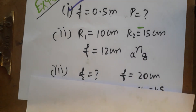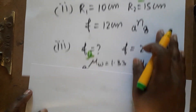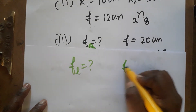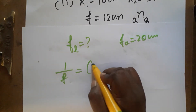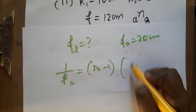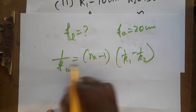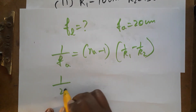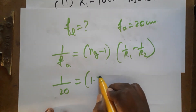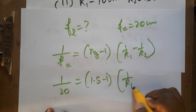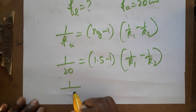For the third question, we need to find the focal length of the lens when placed in water. The focal length in air is given as 20 centimeters. We write the lensmaker's equation for the lens in air: 1 over f_air = (n_glass over n_air minus 1) times (1/R1 minus 1/R2). We know f_air is 20 centimeters and n_glass is 1.5, so (1.5 minus 1) times (1/R1 minus 1/R2).